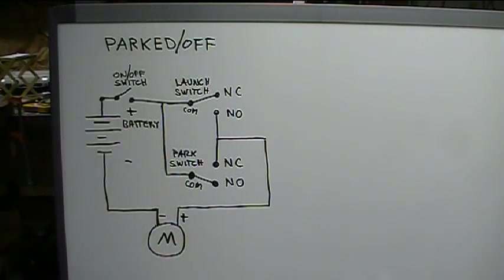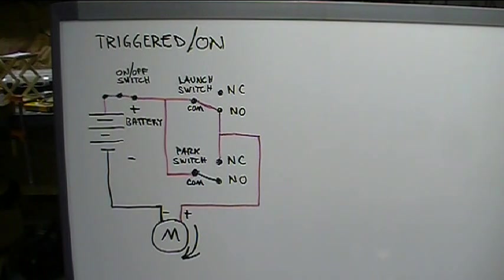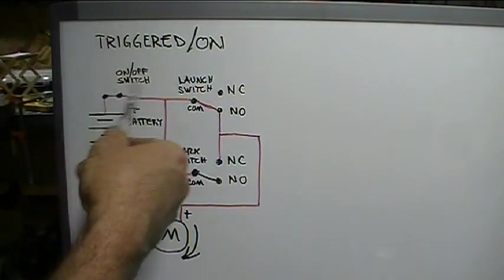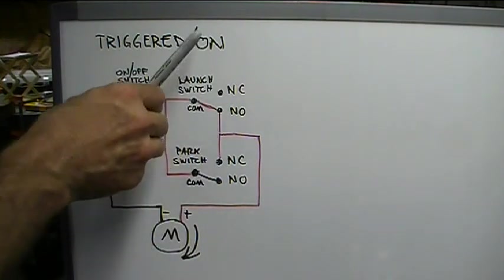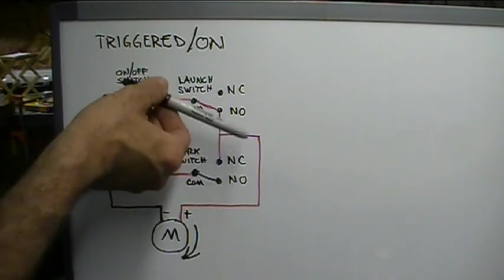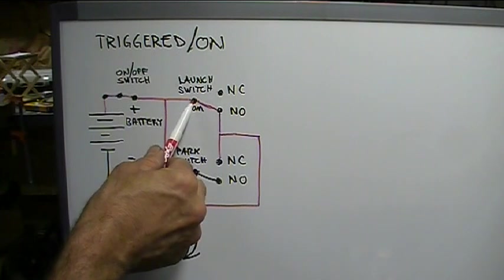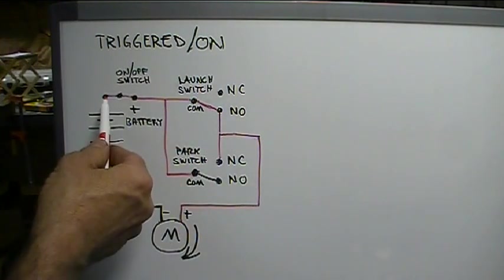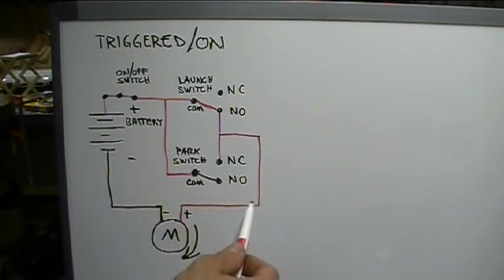Now I'm going to draw this again and show you what happens when the ball hits the switch. Okay, things have changed. We've turned on the device. The ball has hit the launch switch. It's changed from its state of normally closed to being acted upon. So now it's at the normally open position, connected. So we have common and normally open with continuity. Since that happened, now power can flow through here, through here, through this switch to the motor. The motor begins to spin.